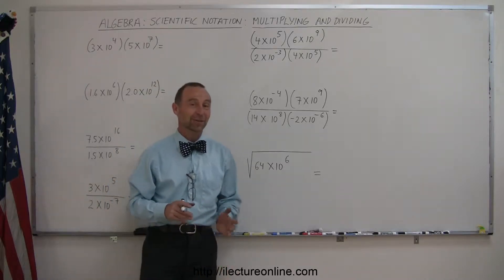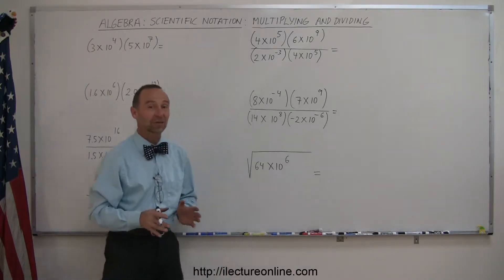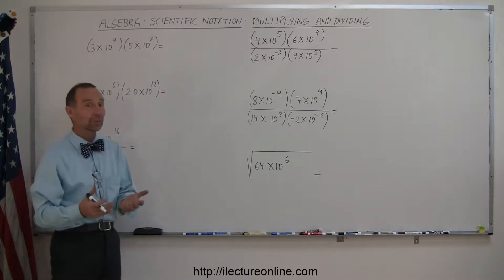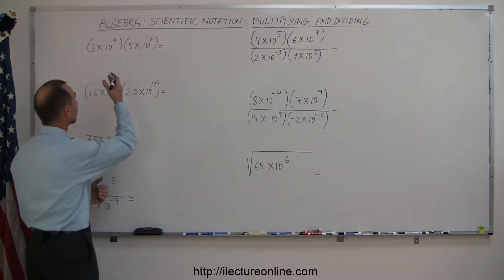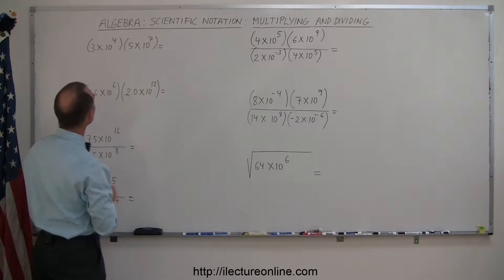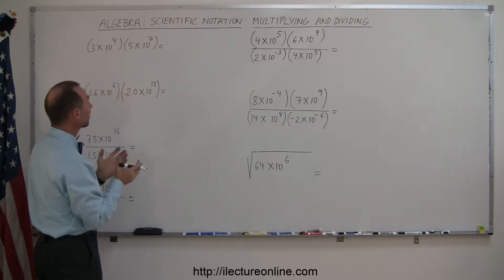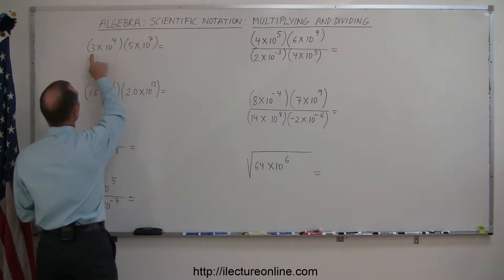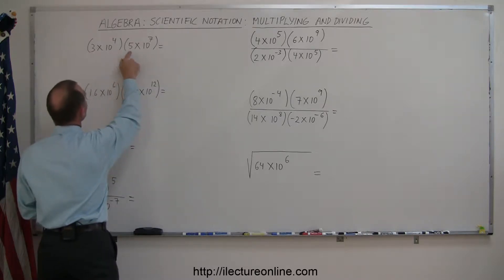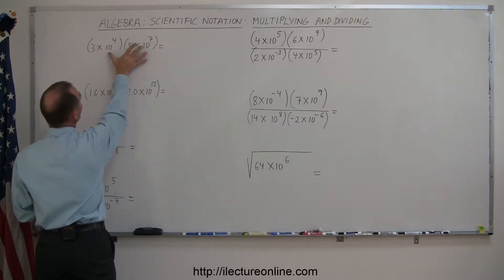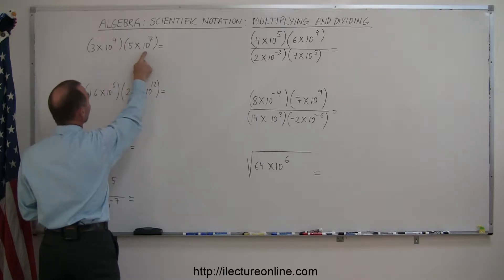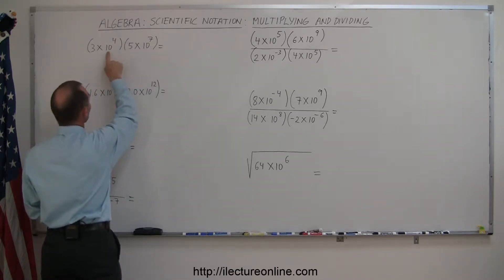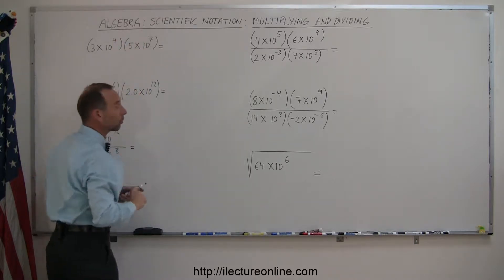Welcome to our lecture online. Here are some examples of how to use numbers with scientific notation — specifically how to multiply and divide. When you multiply scientific notation numbers, you multiply the numbers together, and for the exponent parts you use the laws of exponents. When the bases are the same and you multiply, you add the exponents.